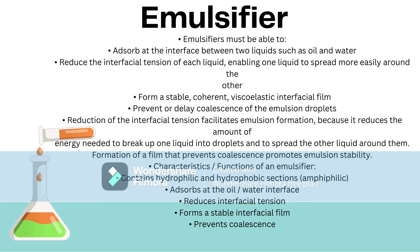Emulsifiers must be able to adsorb at the interface between two liquids such as oil and water, reduce the interfacial tension of each liquid enabling one liquid to spread more easily around the other, and form a stable, coherent, viscoelastic interfacial film that prevents or delays coalescence of the emulsion droplets. Reducing the interfacial tension facilitates emulsion formation because it reduces the amount of energy needed to break up one liquid into droplets. The characteristics or functions of an emulsifier include: being amphiphilic with hydrophilic and hydrophobic sections, adsorbing at the oil-water interface, reducing interfacial tension, forming a stable interfacial film, and preventing coalescence.